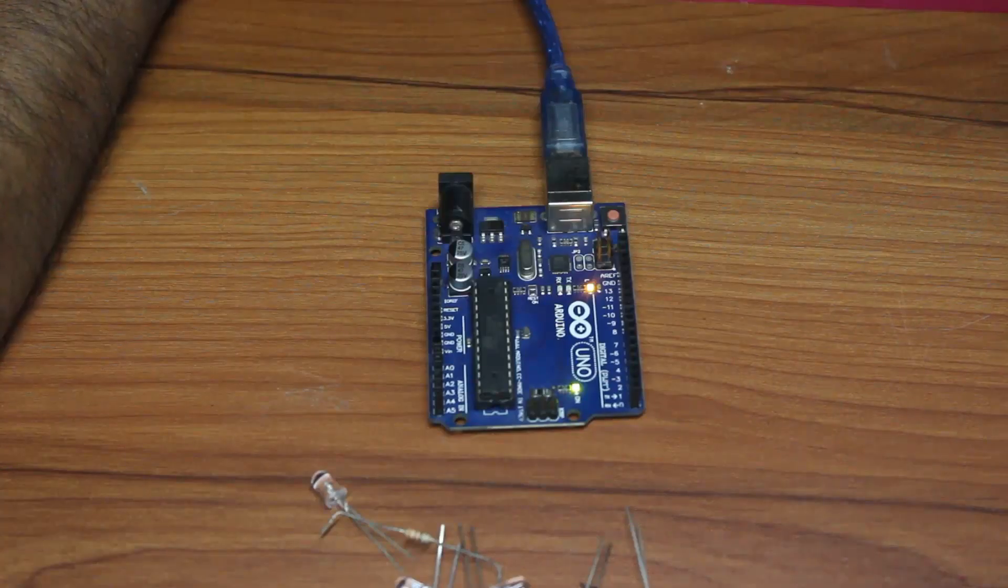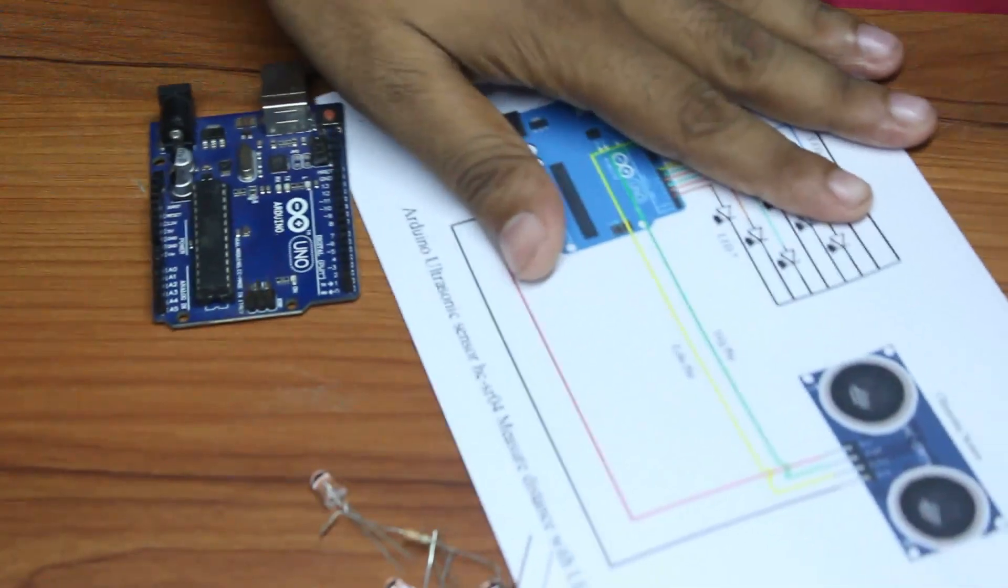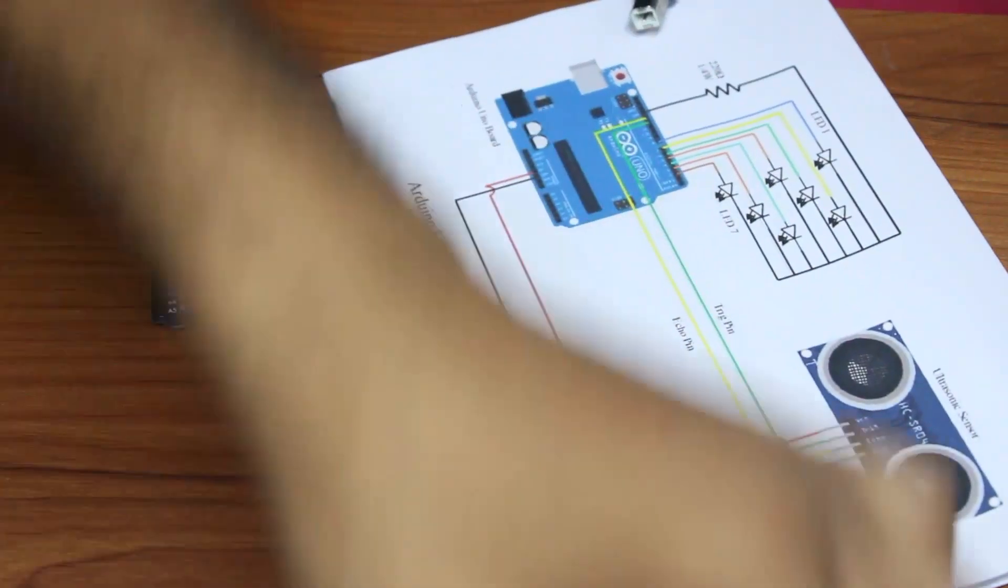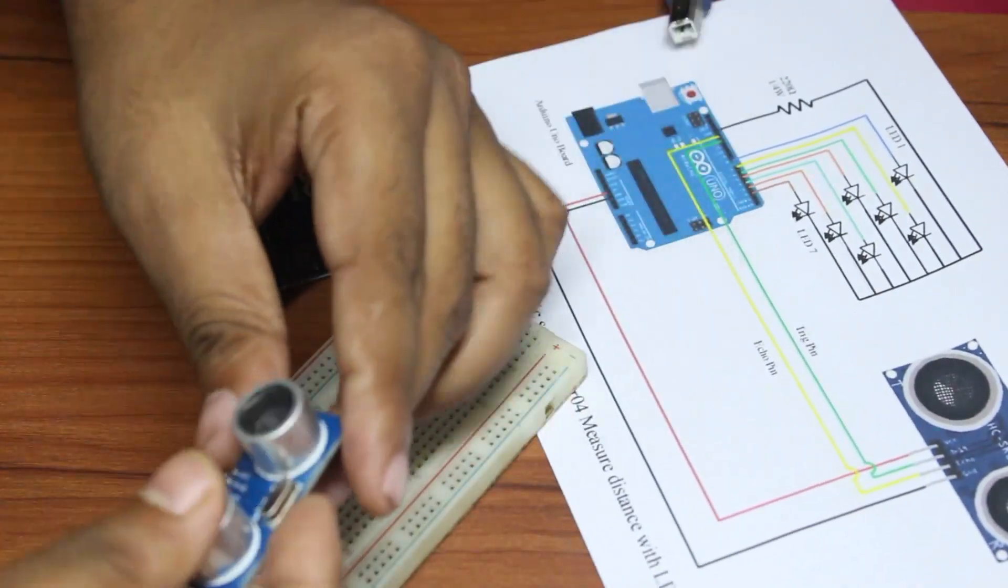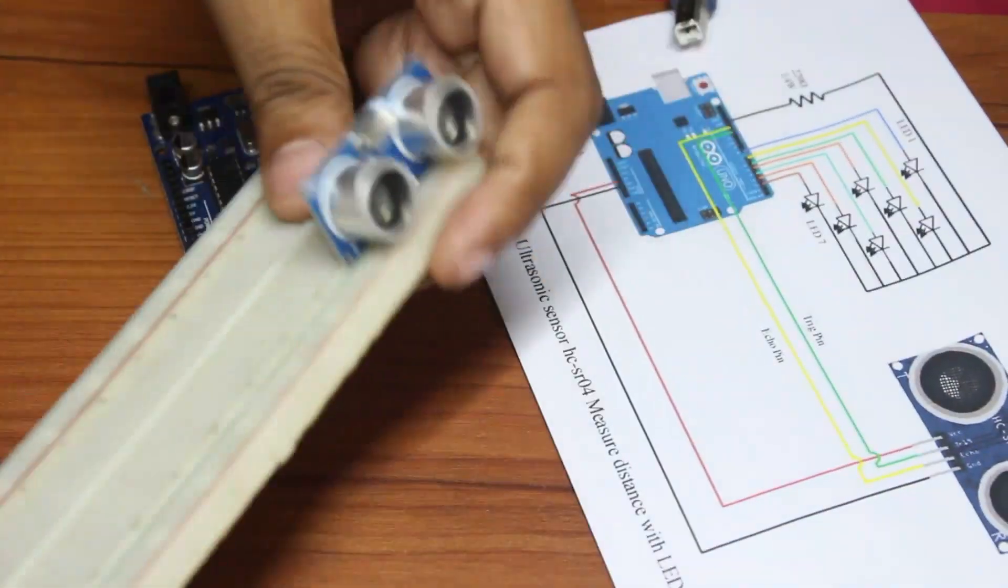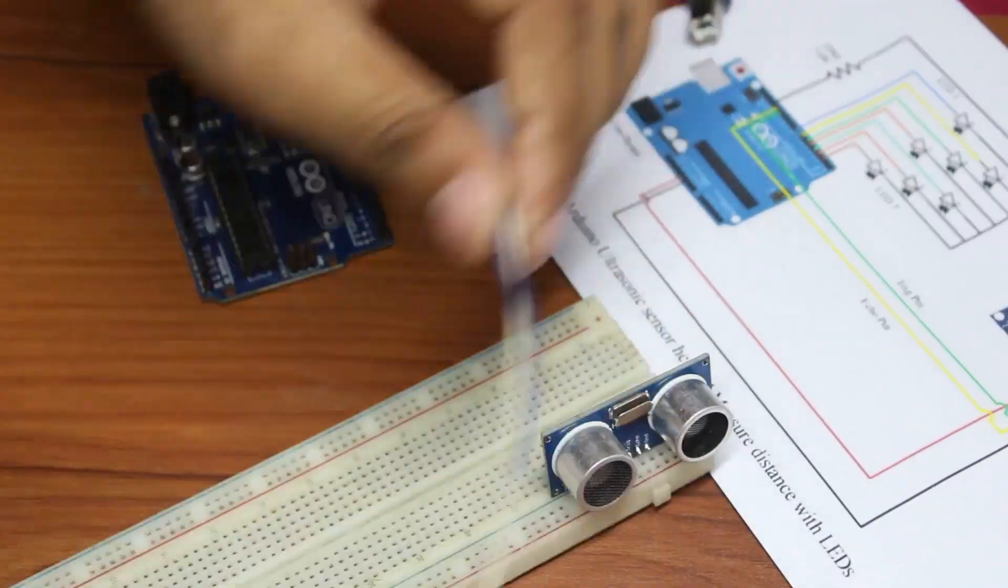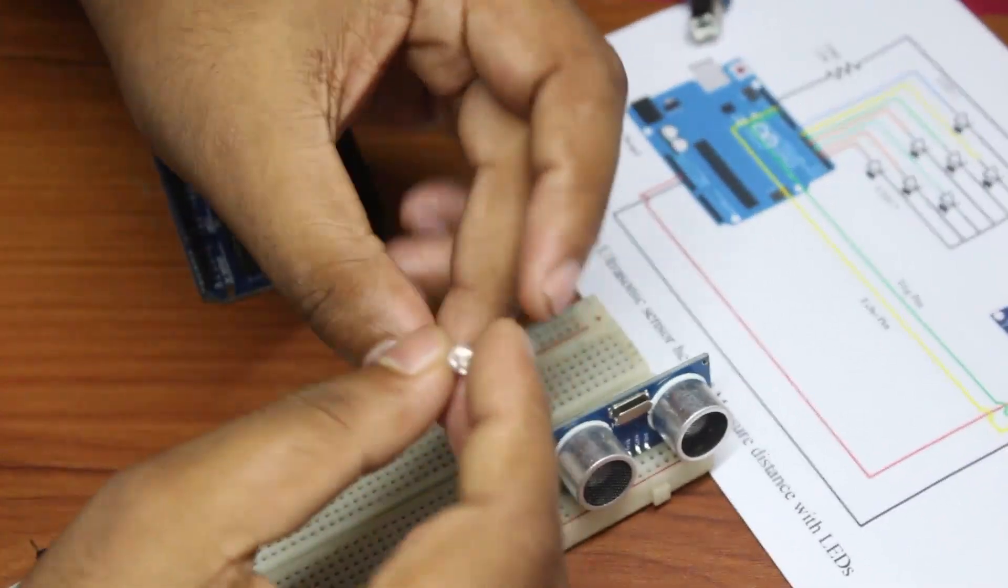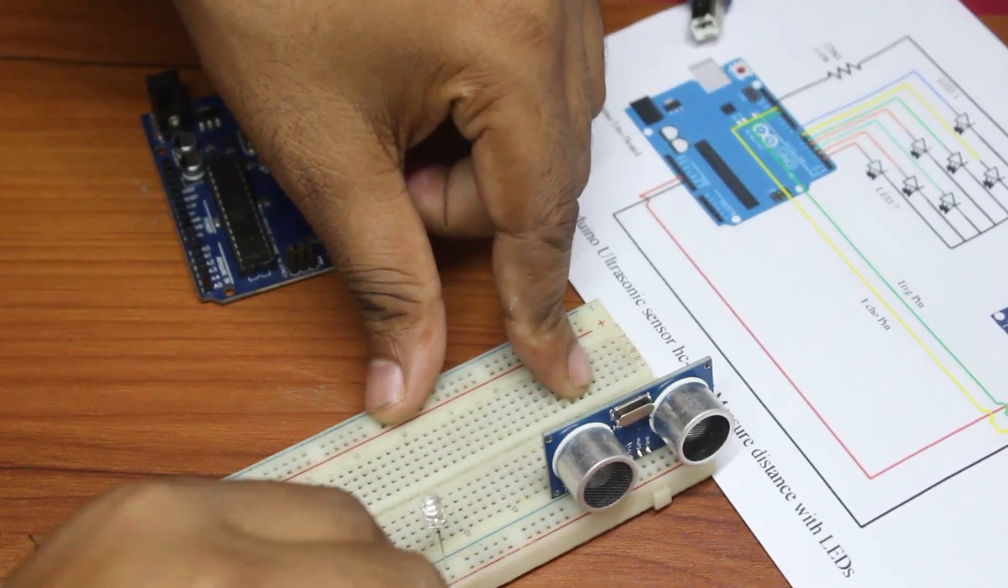Upload the program via USB until complete. Then disconnect the cable. Follow the diagram to assemble the ultrasonic sensor to the positive terminal and make the connections.